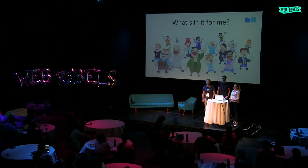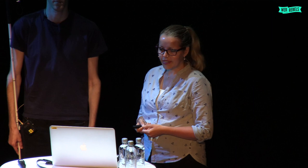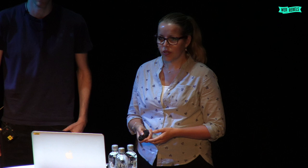So what's in it for you here? After this talk, you'll have a few more tools on how to make web accessible. You'll know what's the ideal, and you'll know some ways to make the code accessible even when the ideals don't match reality. We'll go through some examples on semantics, skip links, some design that is really hard to code, how to make the screen reader know what's going on on the site for both text and updates, and some graphic elements like images and SVGs.